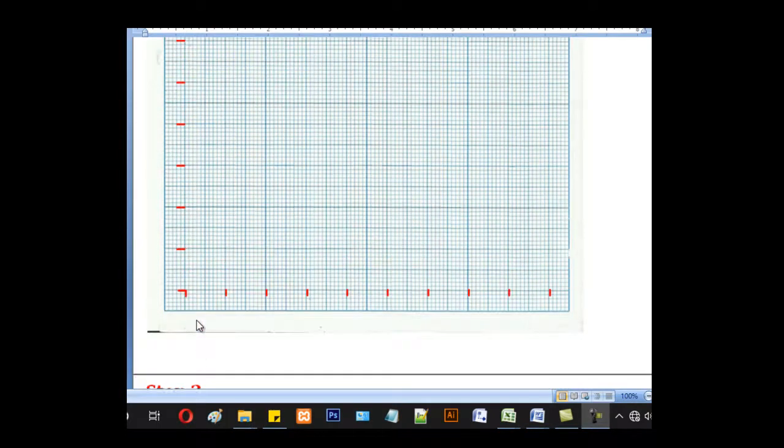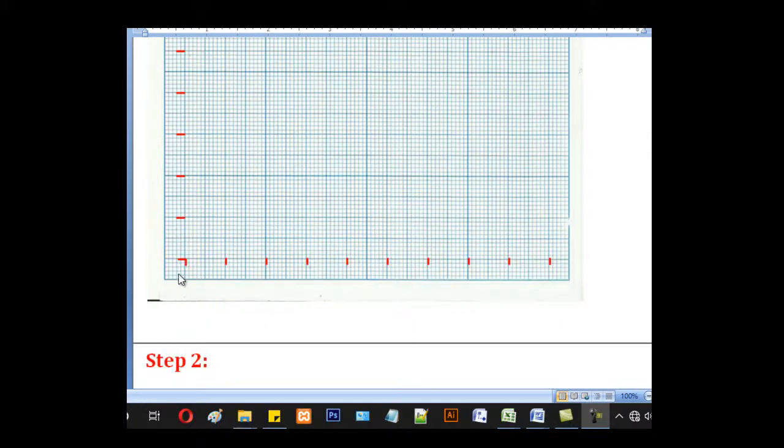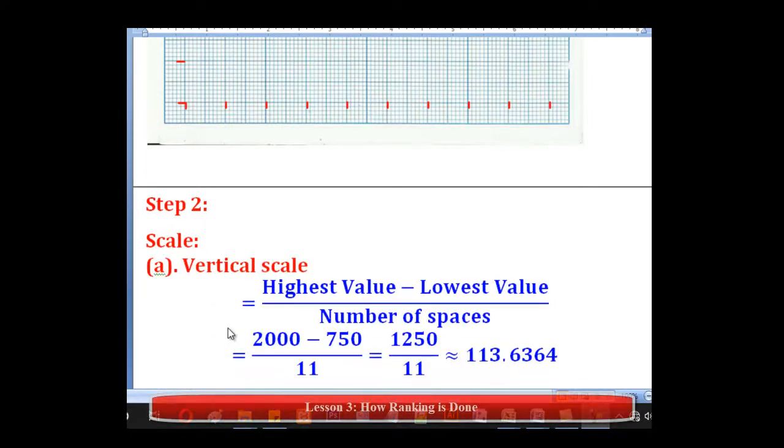So the first step, when you are given your graph paper, the first step is to leave one centimeter on the vertical axis and demarcate these, make these demarcations using intervals of two centimeters at the end. Do the same for the horizontal axis. Leave one centimeter, demarcate, leaving intervals of two centimeters on each.